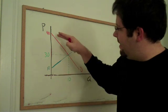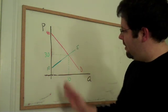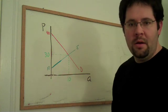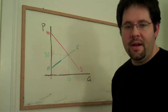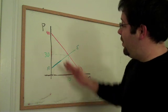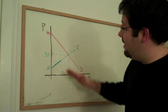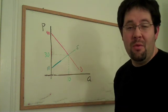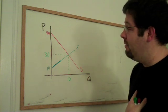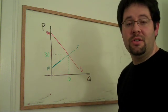If we look at the height of the demand curve, at these quantities here, it's clearly above the market price of 30. This difference between the market price of 30 and the consumer's willingness to pay, which is given by the inverse demand curve, that's just what we call consumer surplus.